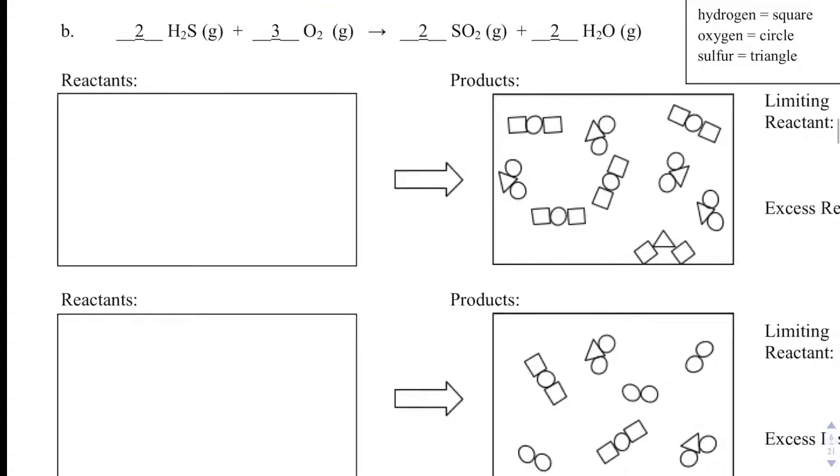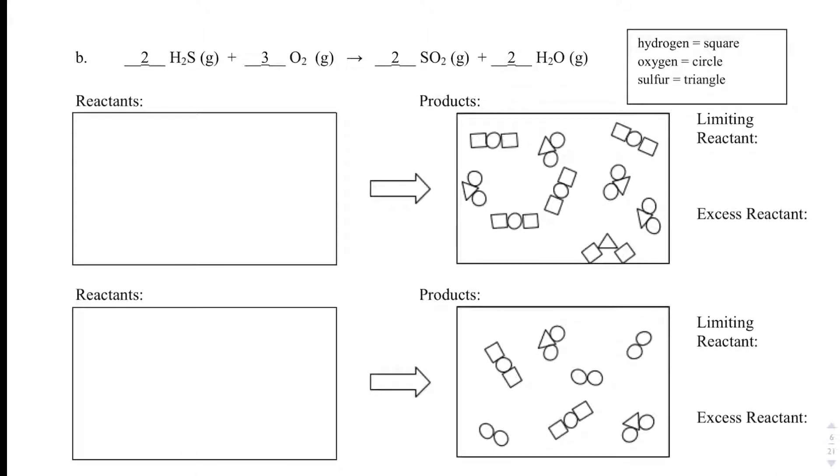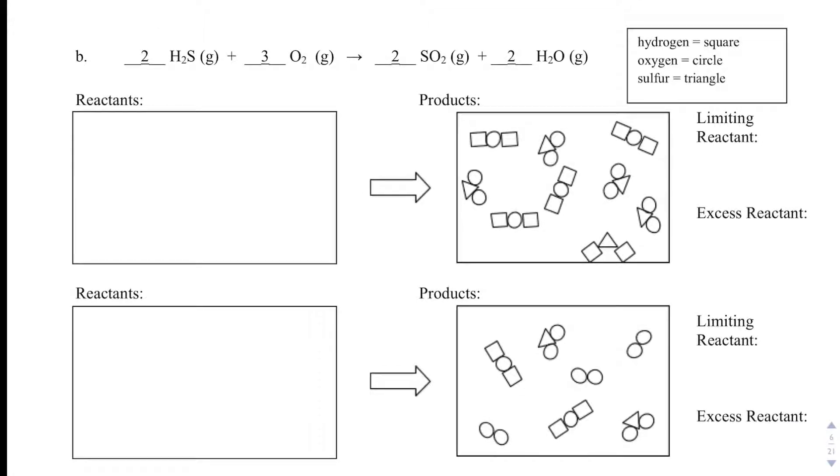Okay, let's do a harder example. What we have in example B is the same type of problem, except we're given the products. So I'm starting on this side of my reaction. And so what I want to do is I want to go ahead and I want to label everything. So water is going to be square, circle, square. And then SO2 is going to be circle, triangle, circle. So I'm just going to go through and I'm going to label everything.